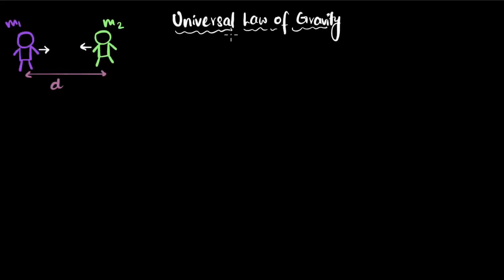Let's explore the universal law of gravity. It says that any two masses, like say you and me, you and the sun, sun and the earth, any two masses will attract each other, will pull on each other.